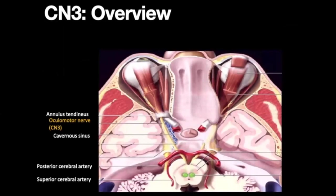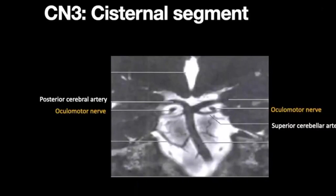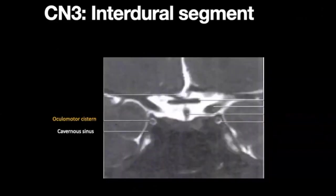The oculomotor nerve has a short nuclear and parenchymal segment, then a fairly long cisternal segment, followed by the interdural segment, canalicular segment and extra-foraminal segment. The cisternal segment has important relations: superiorly the posterior cerebral artery and inferiorly the superior cerebellar artery are in close relation, so aneurysms of these arteries can affect the oculomotor nerve. The nerve lies at the superior and lateral corner of the cavernous sinus. The CSF around the oculomotor nerve — called the oculomotor cistern — can be enlarged in benign intracranial hypertension.